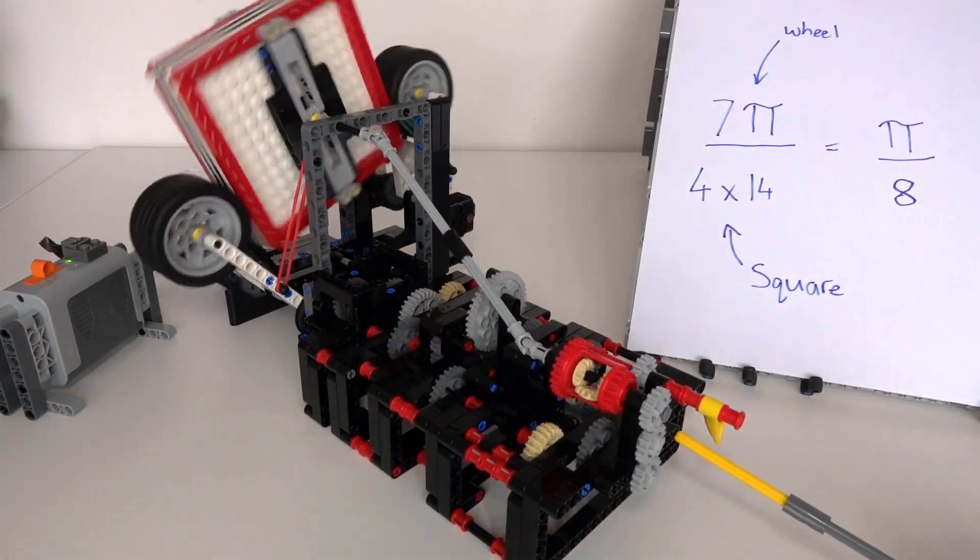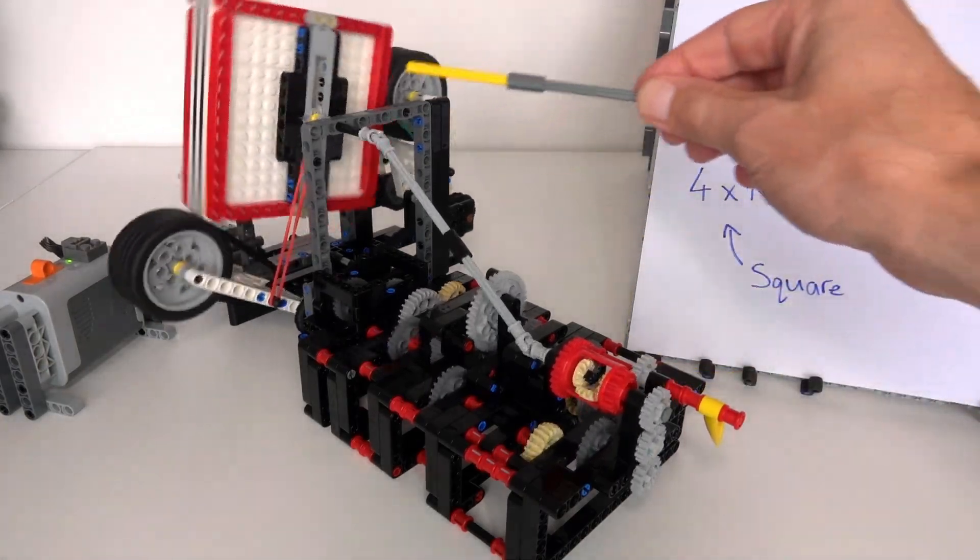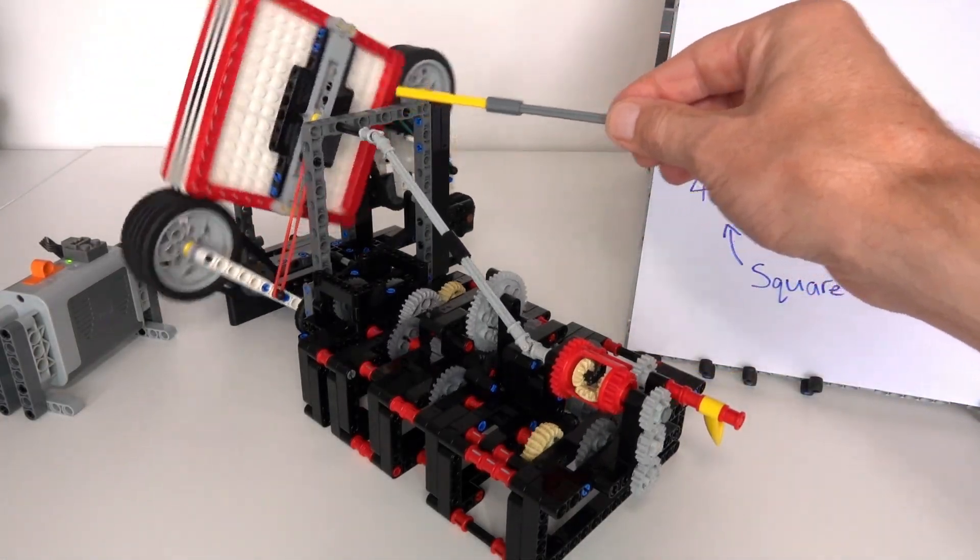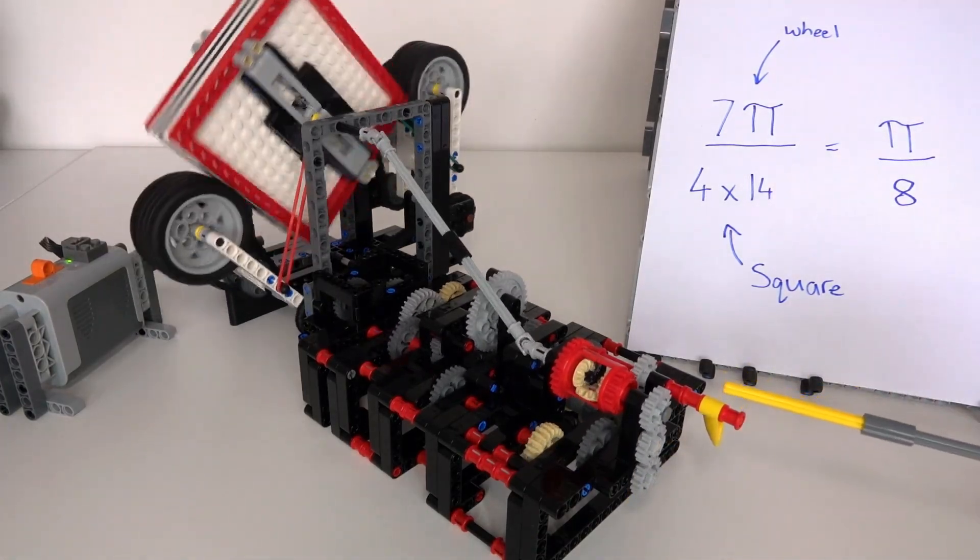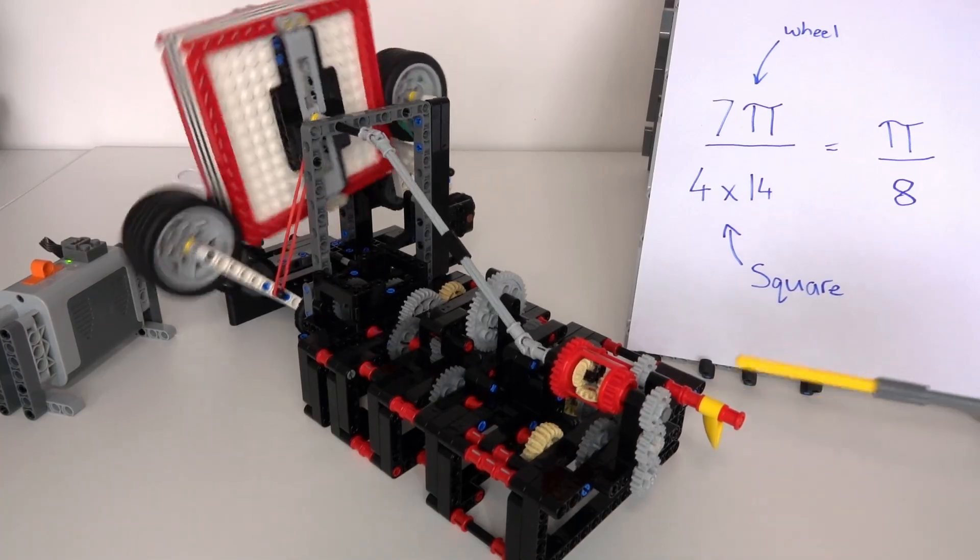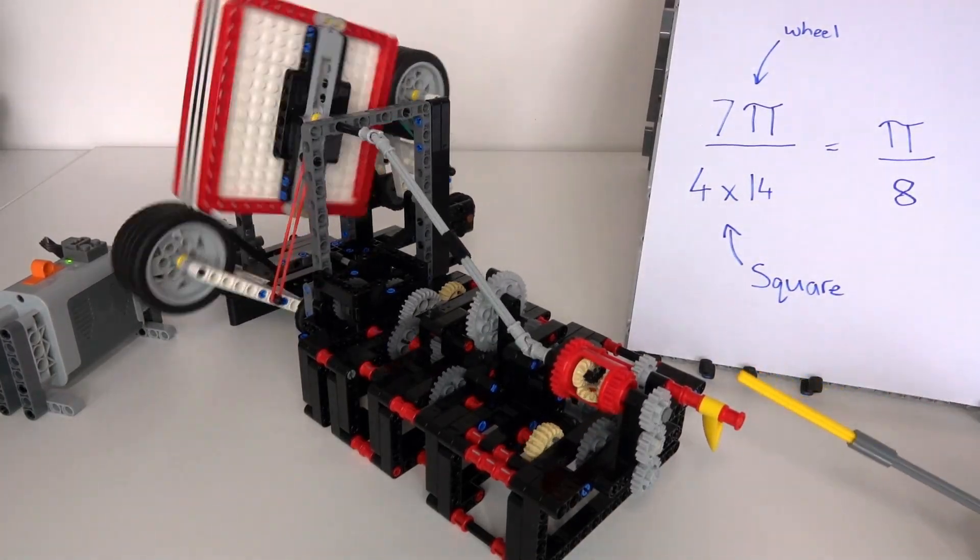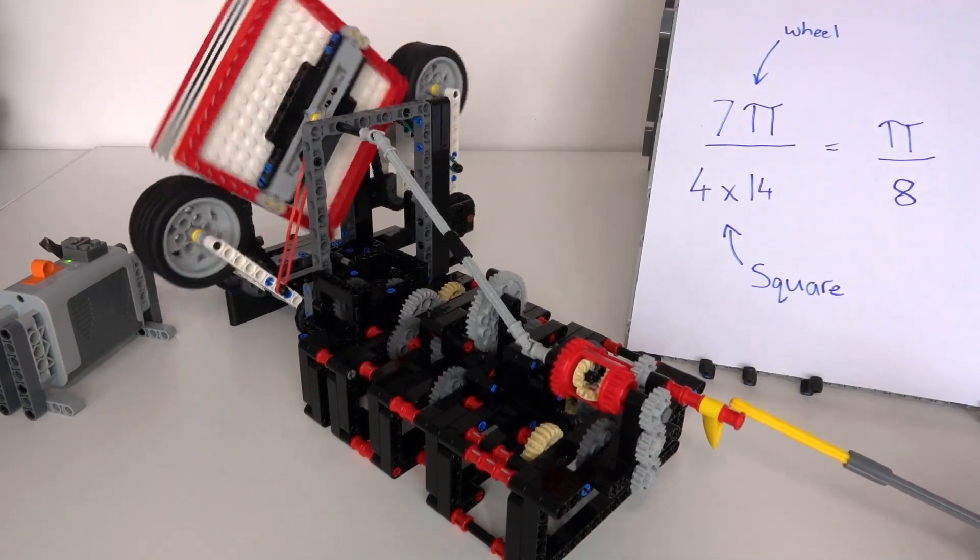That's being fed up through the bottom here, and they're going in opposite directions to create the difference between the pi over eight generated by the square wheel and the fraction. We are comparing the difference through this differential. Look at that—that is the output. If the two ratios are identical, then this will not move at all. And look at that!